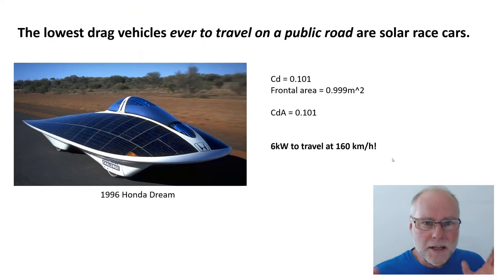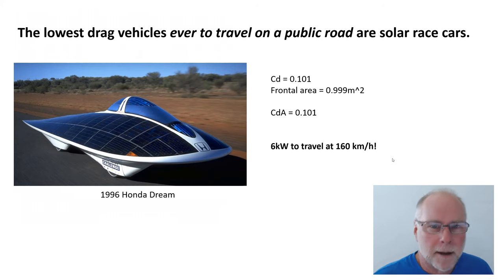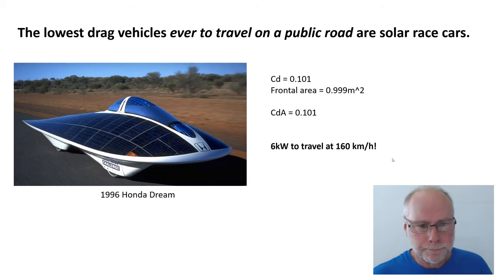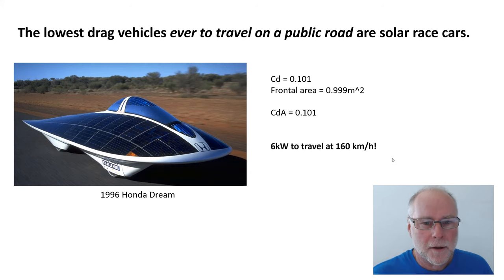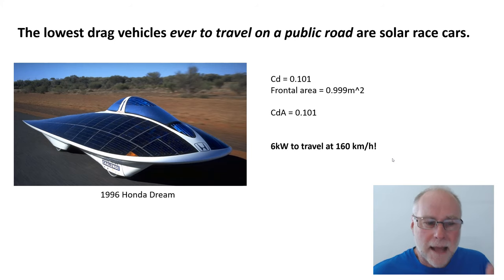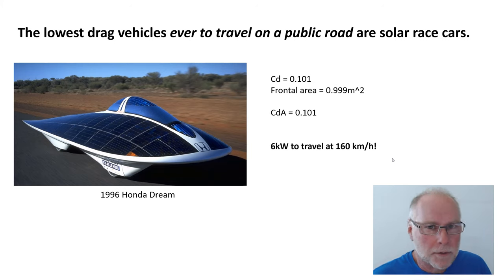The first point to take on board is that by far the lowest drag vehicles to ever travel on a public road are the solar race cars. They are far slipperier than any other vehicle that has ever been driven. So take a look at this 1996 Honda Dream: drag coefficient 0.101, frontal area 0.999 square metres, total drag area 0.1. Just incredible. That car took only 6 kilowatts to travel at 160 kilometres an hour — 100 miles an hour.